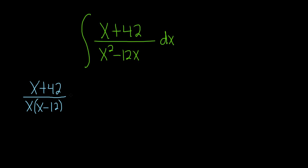Because we have distinct linear factors, we can use the cover-up method. Let's take that approach. It's a linear factor, so it's A over x. And then another linear factor, so it's B over x minus 12.